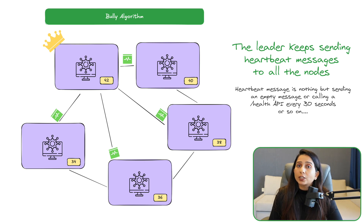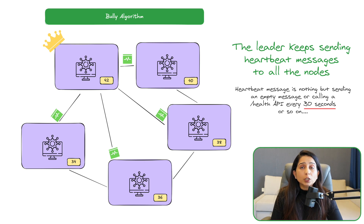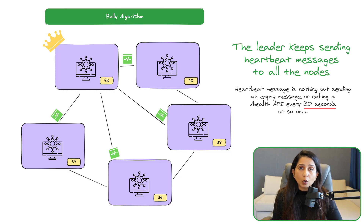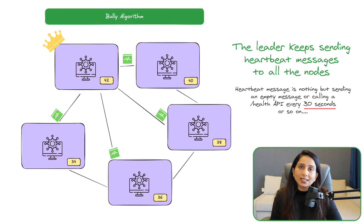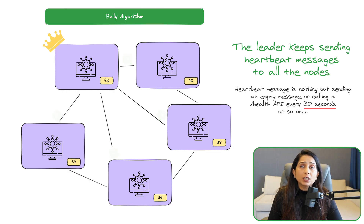The leader sends heartbeat messages repeatedly over a certain period of time — maybe every 30 seconds or every 45 seconds. This time interval is kept short enough but cannot be kept too long, like two minutes. It depends on how high the availability of the system needs to be, but typically 30 to 60 seconds is the interval used for the leader to send these heartbeat messages.